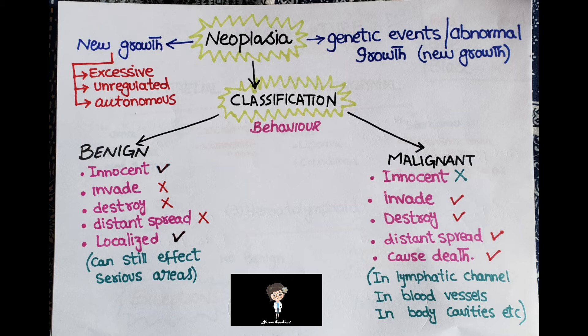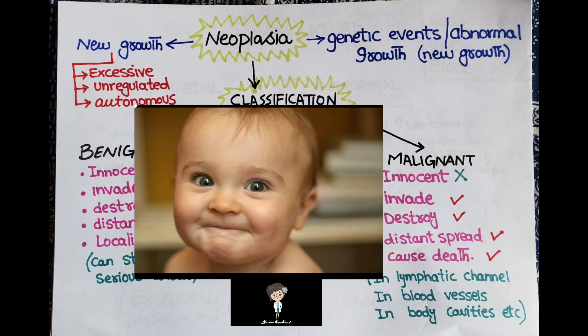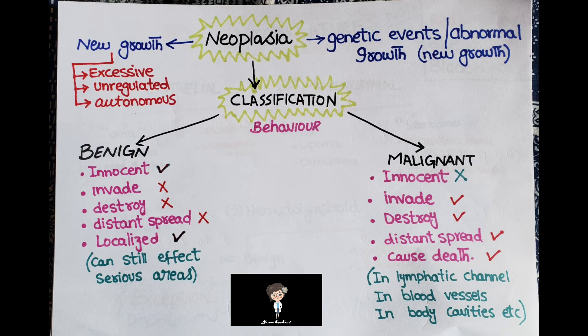Benign tumors are considered innocent — they are generally not capable of invading or destroying the primary or adjacent organ. They do not destroy tissues and cannot produce distant metastasis. They tend to be localized and relatively slow-growing.